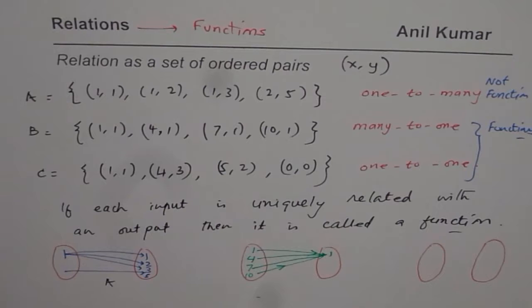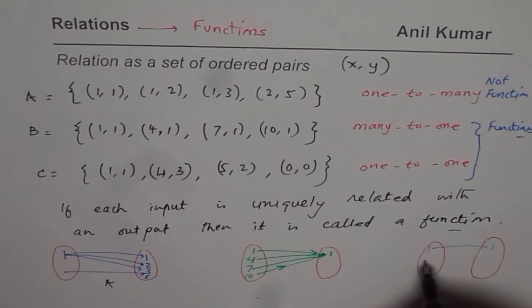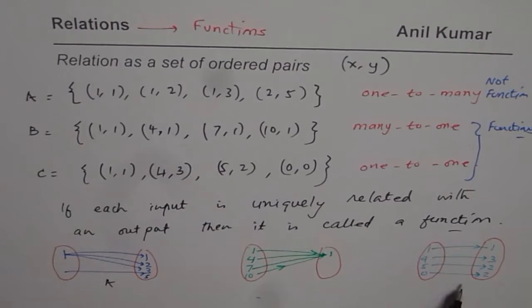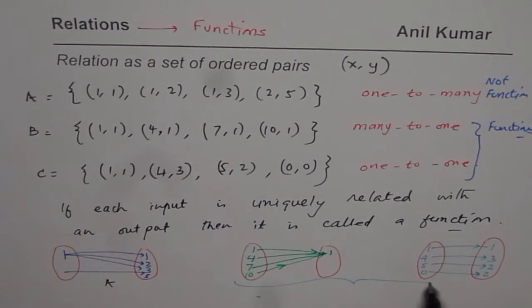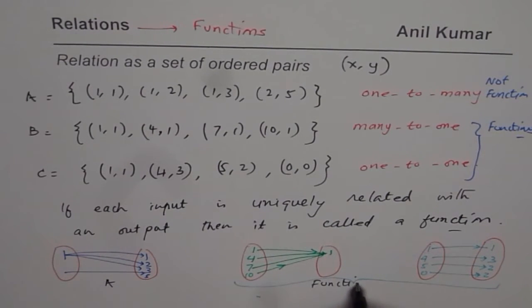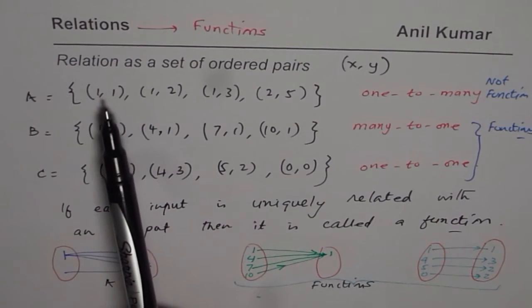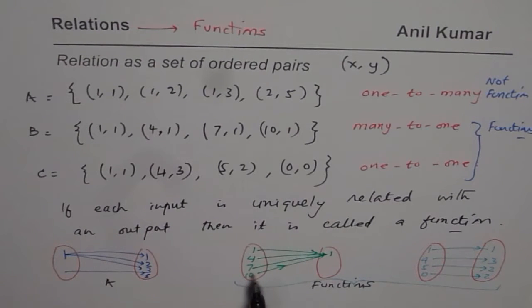The last relation C in the mapping diagram: 1 to 1, 4 to 3, 5 to 2, and 0 to 0. This is a 1-to-1 relation and also a function. So these two — relations B and C — are both functions, since every input is related with exactly one output. That is how from the ordered pairs we can figure out whether something is a function or not.